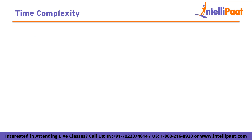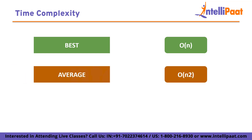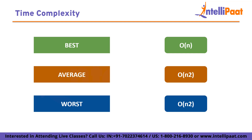The time complexity of Insertion Sort is O(n²) in the worst case and on average. This means that as the number of elements n increases, the time to sort grows quadratically. The worst case occurs when the input list is in reverse order — for each element, we need to compare it with all previous sorted elements, resulting in nested loops with approximately n²/2 comparisons and swaps. However, in the best case, when the input list is already sorted, Insertion Sort performs optimally with a time complexity of O(n), since each element is already in its correct position.